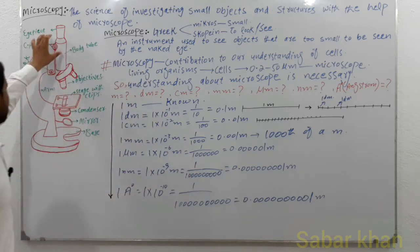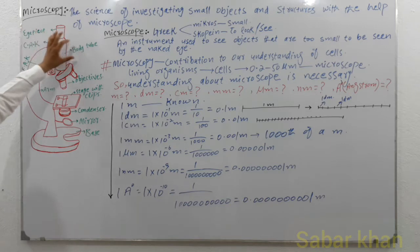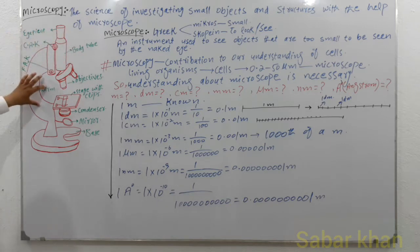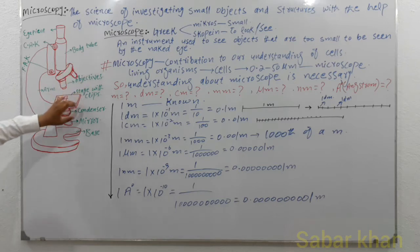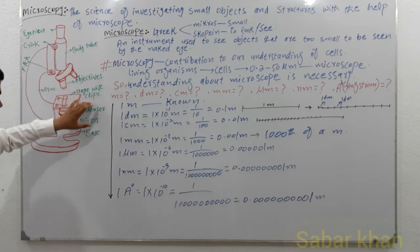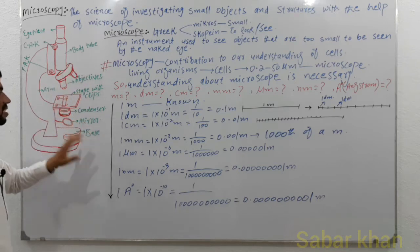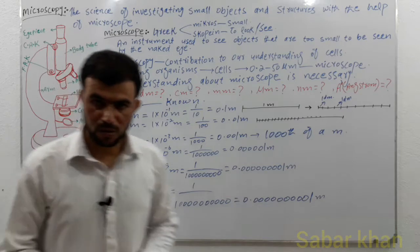This is the diagram of a microscope. Its parts are: eyepiece, body tube, coarse adjustment knob, fine adjustment knob, arm, objectives, stage with clips, condenser, mirror, and the base of the microscope.